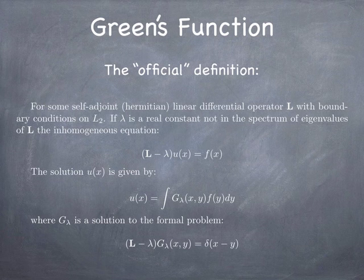The way you think about it is that the Green's function is a solution to the problem of a delta source. So the idea is: if you have a delta source at y, what's the response — what would be the solution at x for a delta source located at y? That's how you think of it, so that if you want to ask what happens with a distributed source, you can think of it as a superposition of delta sources.